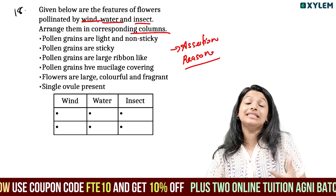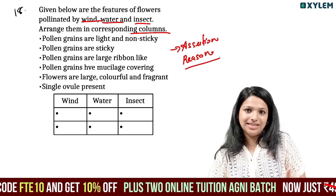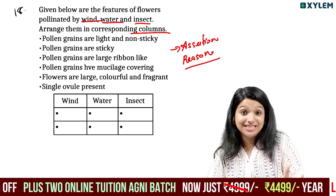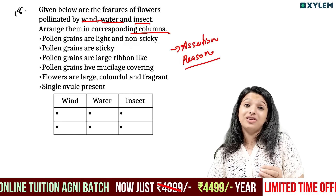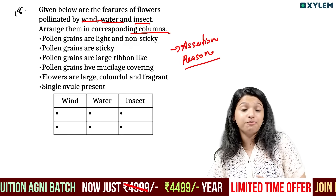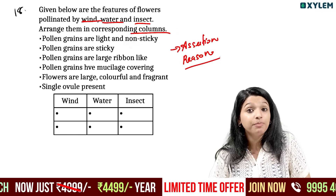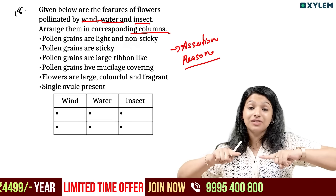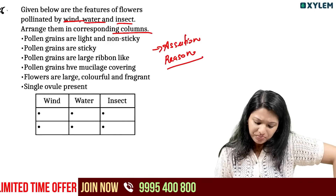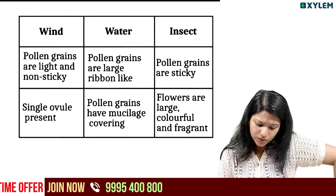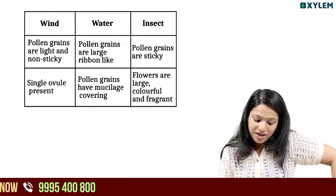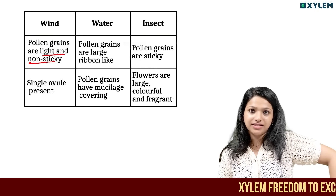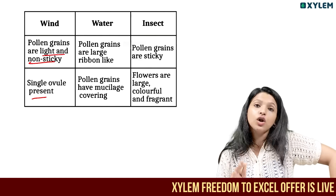The assertion-reason type is common in entrance exams. Wind-pollinated flowers have light and lightweight, non-sticky pollen grains, with a single ovule. These are the features of wind-pollinated flowers.